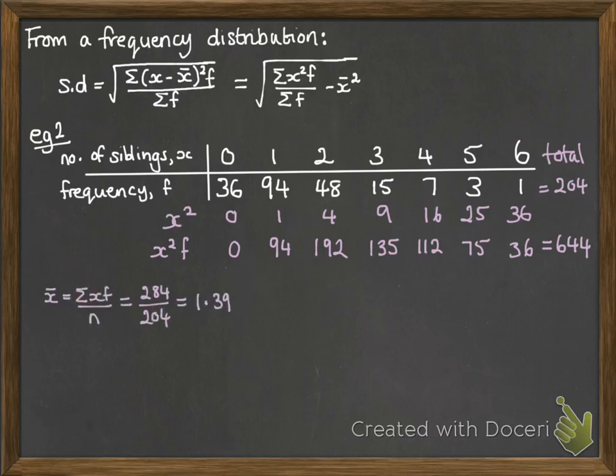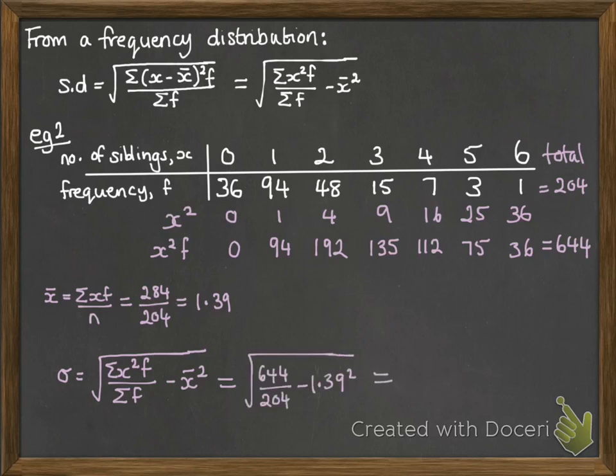We will need the mean. So that's what we did in the last video. If you don't remember how to do that, go back and look at it now. So we've got the mean of 1.39. We need to put that into our formula for the standard deviation. So we're going to take that 644, divide it by the 204, take away the mean squared, and square root it. Final answer is 1.10 to three significant figures.